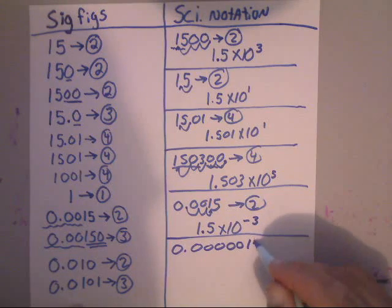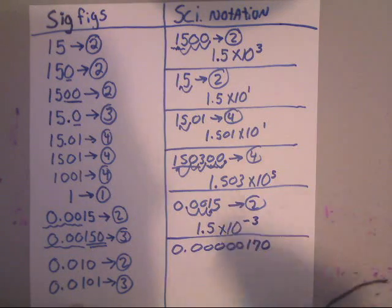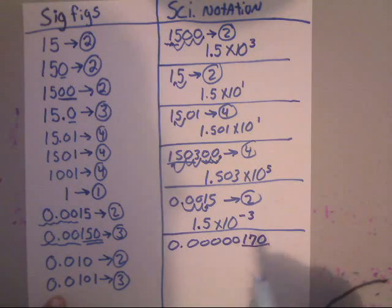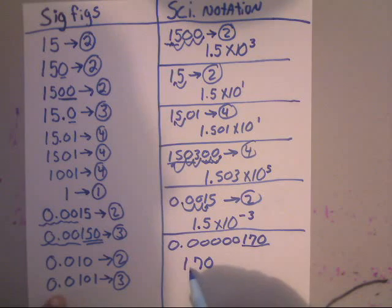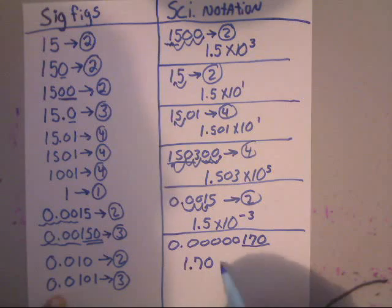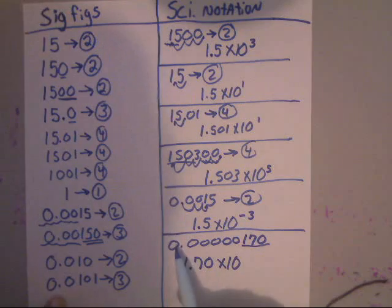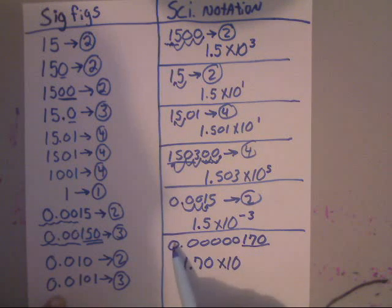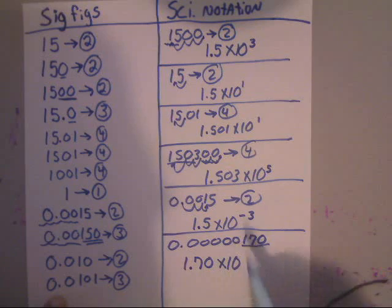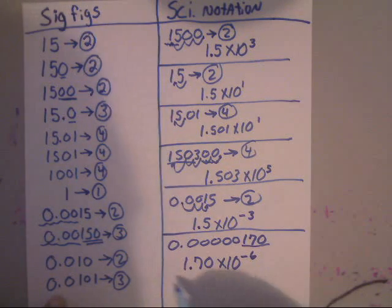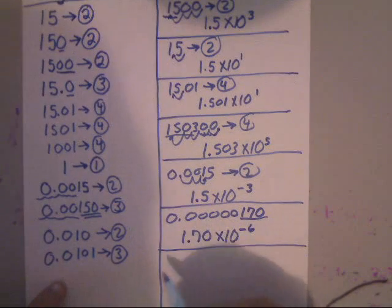Now, let's say you have 0.000000170. In this one there are only 3 sig figs, so you write down those 3. Remember, put the decimal between the first two numbers that are not a zero in the front — and there it is: 1.70. Write times 10 and count the number of zeros in the front. Notice there's a zero in the front here: 1, 2, 3, 4, 5, 6 — so that would be to the negative 6 since it's less than 1.